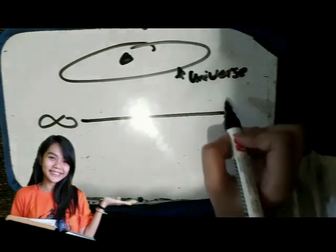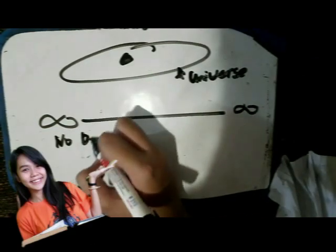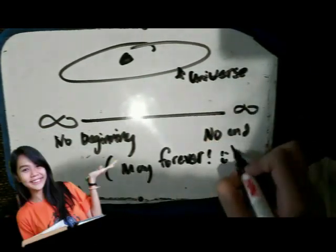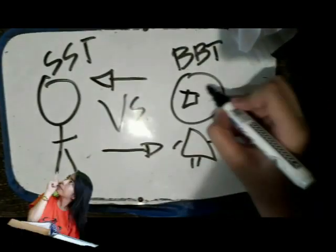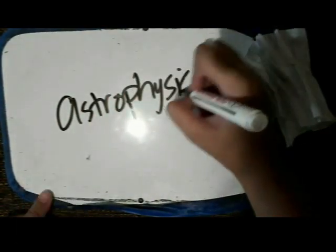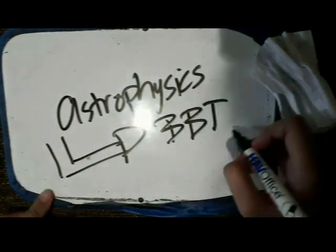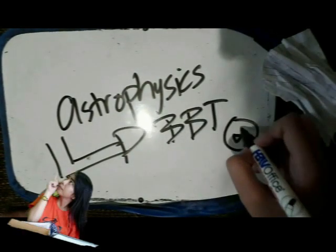The steady state theory asserts that although the universe is expanding, it nevertheless does not change its look over time — yet it has no beginning and no end. The key importance of the steady state model is that as a competitor to the Big Bang, it was an impetus in generating some of the most important research in astrophysics, much of which ultimately ended up supporting the Big Bang theory.